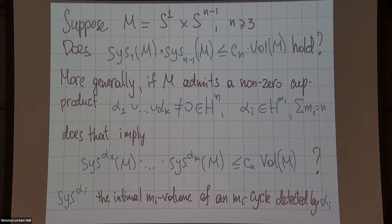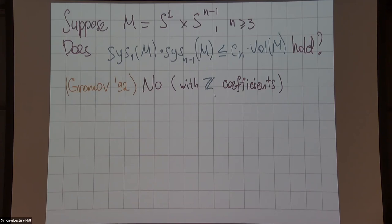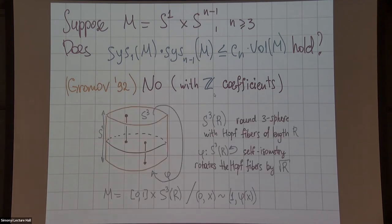I didn't specify the coefficients so far, but we will soon see this is relevant because the answer is no with Z coefficients. The example on S1 cross S3 is constructed: you start from the usual round metric for S3, multiply it by the interval, and then you glue top to the bottom using some carefully chosen self-isometry of S3.